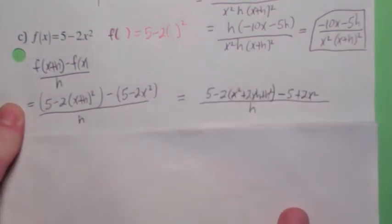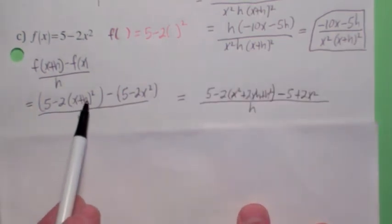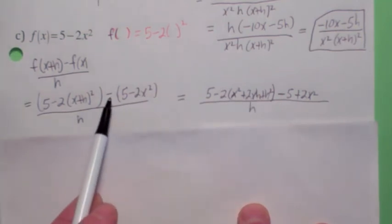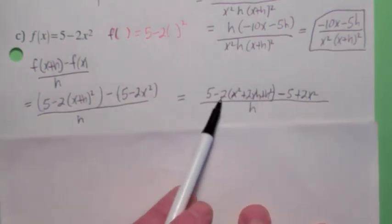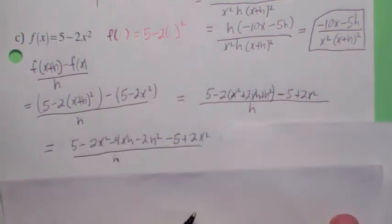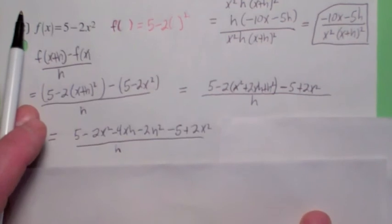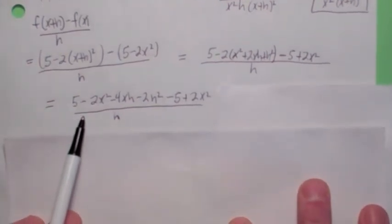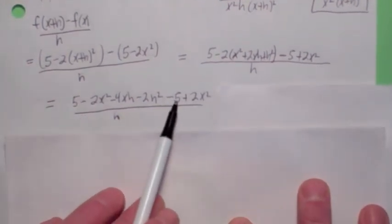What happens is, when you multiply the (x+h) squared out, and when you distribute the minus sign here, the next step is to distribute the negative 2. I'm purposely using a couple extra steps here, so you can see what's going on. What should happen if you do it right, a lot of stuff should cancel. The fives cancel, the 2x squares cancel.